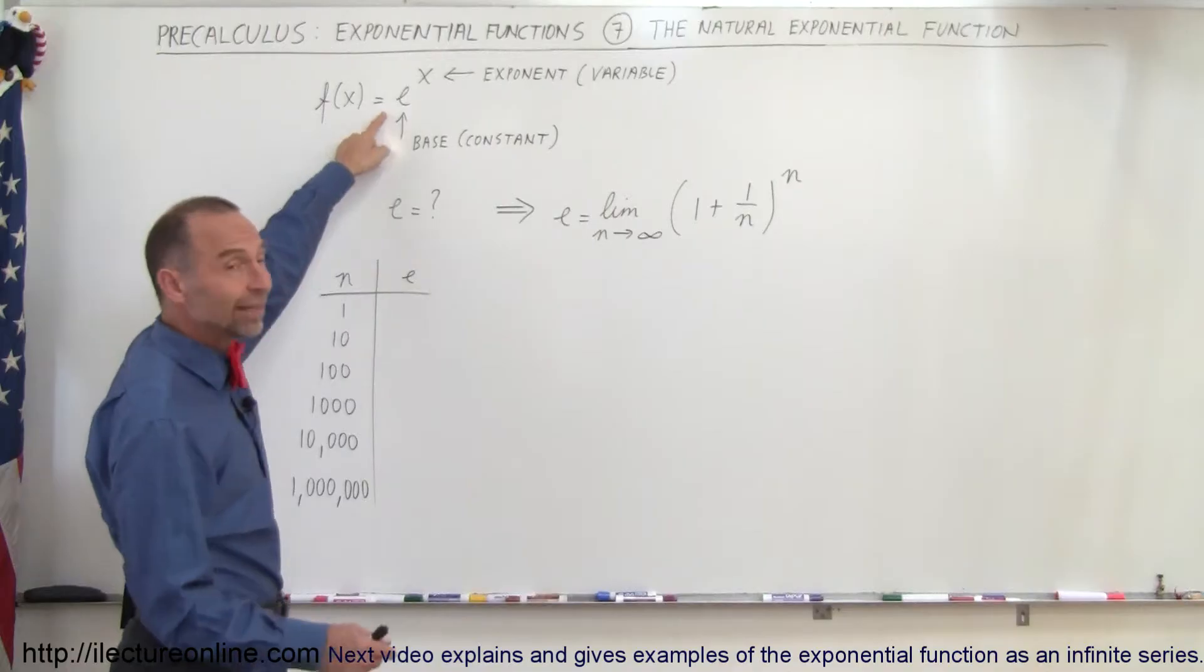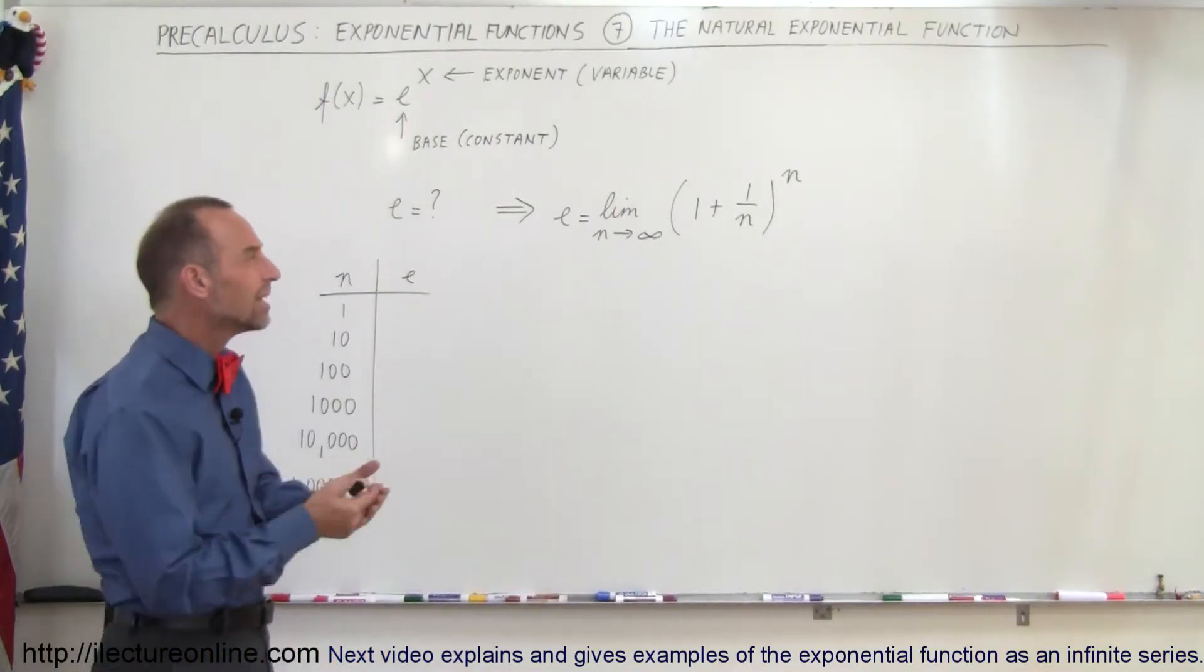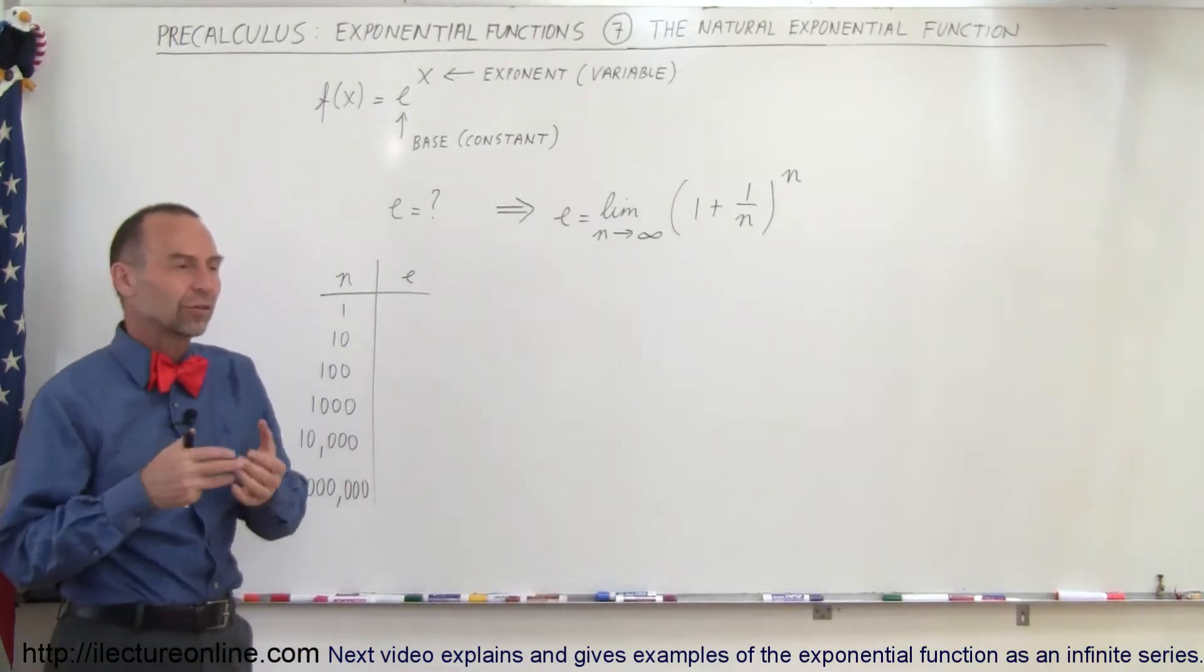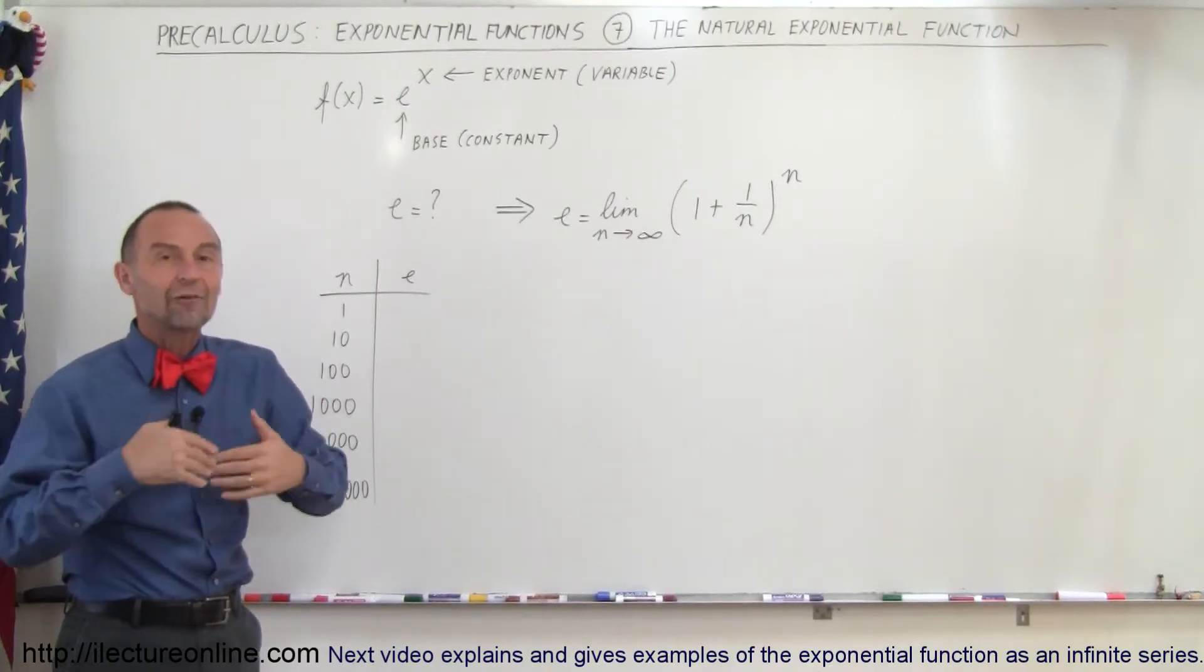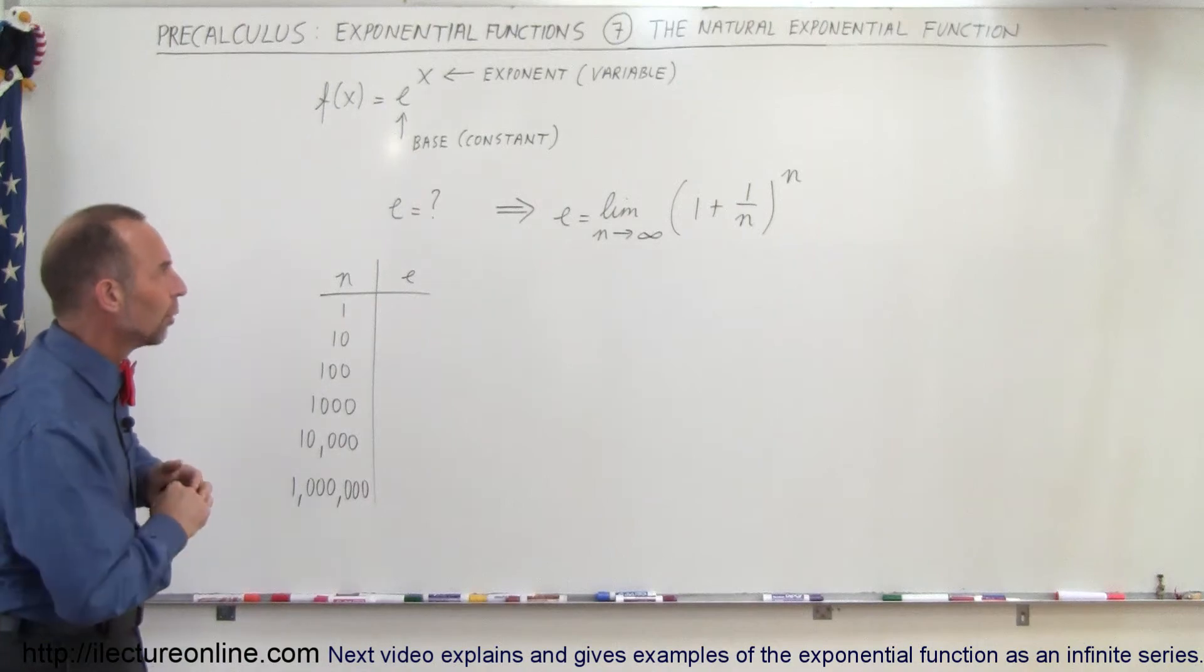Now this constant is in this case e. What is e? Well, e is a natural number. It's a number that exists in nature. It's a number that indicates how fast things grow in nature. We'll get into that in just a little bit more.